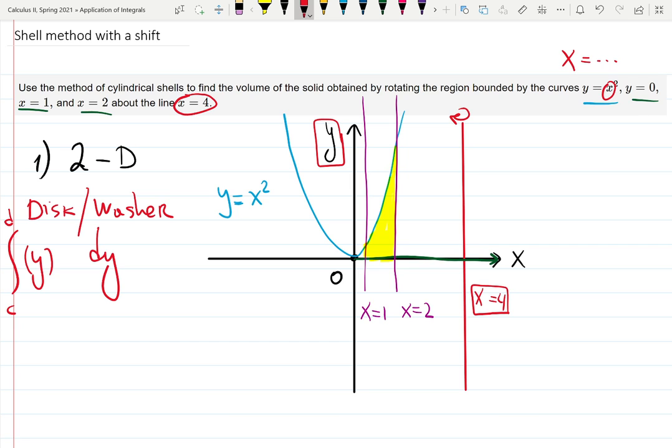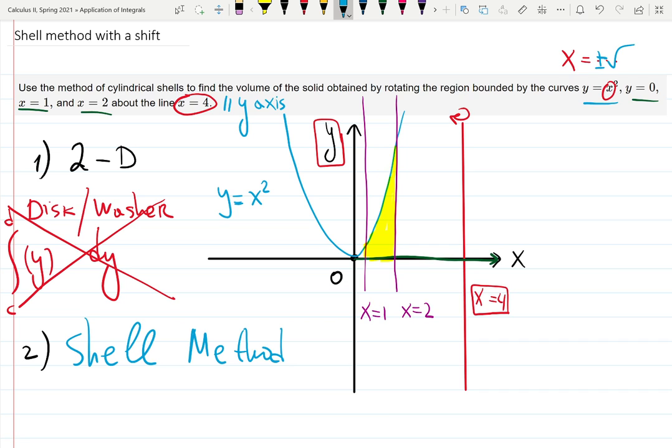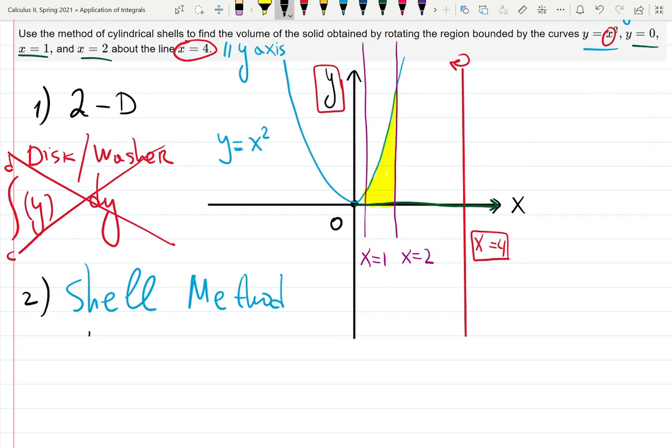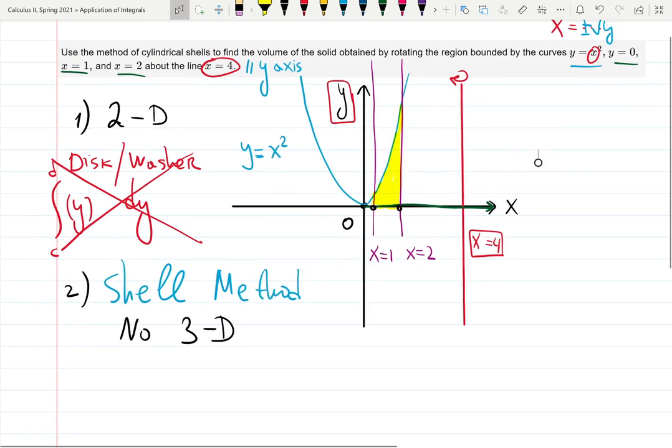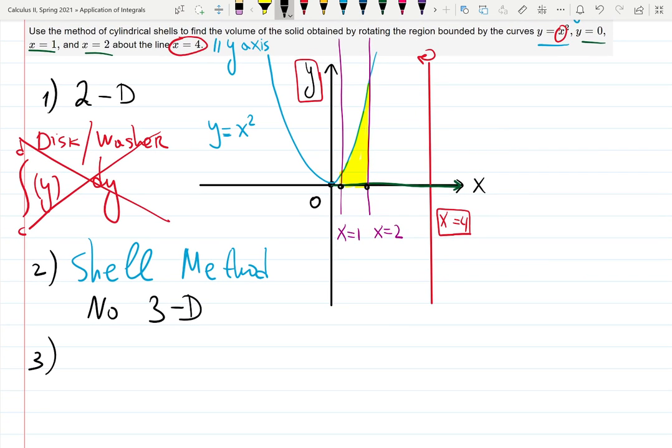That's why it's actually going to be more convenient to use the x case. But what kind of method helps us to use the x case when rotation is happening around something which is parallel to y axis? Shell method. So that's how I know it's a good choice. Shell method will allow us to avoid finding x as plus minus the square root of y and then dealing with that. But actually it will work and you can try and get the same answer.